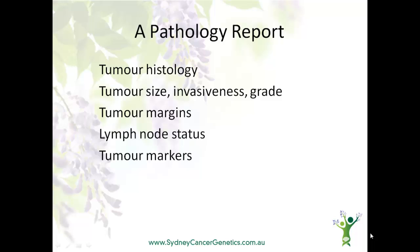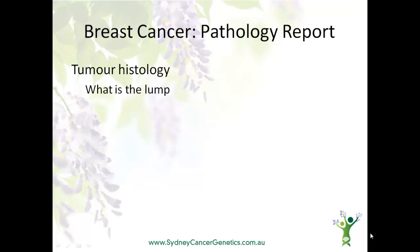Now let's look at the pathology report. It describes several things: the tumour histology, the tumour size, invasiveness and grade, information about the tumour margins, as well as the lymph node status, and especially in the case of breast cancer, the tumour markers. Let's step through this one by one.